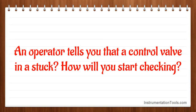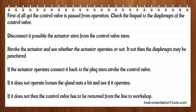An operator tells you that a control valve is stuck. How will you start checking? First of all, get the control valve bypassed from operation. Check the signal to the diaphragm of the control valve. If possible, disconnect the actuator stem from the control valve stem and stroke the actuator to see whether it operates. If not, then the diaphragm may be punctured. If the actuator operates, connect it back to the plug stem and stroke the control valve. If it does not operate, loosen the gland nuts a bit and see if it operates. If not, the control valve has to be removed from the line to the workshop.